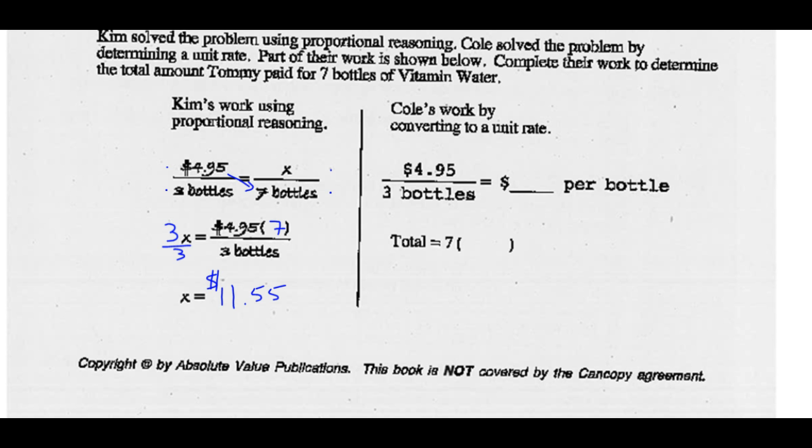You look at Cole's work. He went $4.95 for three bottles. How much is it per bottle then? So you go $4.95 divided by 3, and you get $1.65 per bottle. Now, he bought seven bottles, and if each bottle is $1.65, he can figure out his total. So seven times $1.65 is also $11.55. So you can do it either way. It doesn't matter which method you choose.